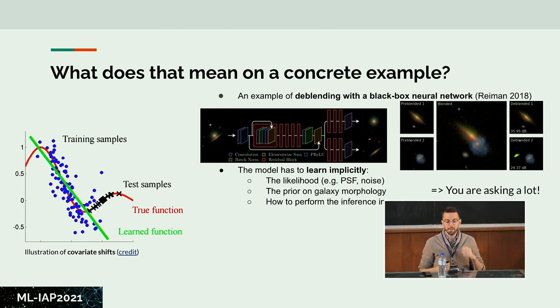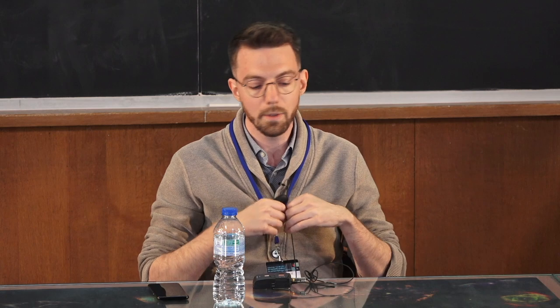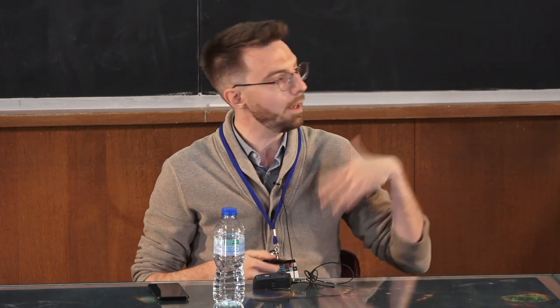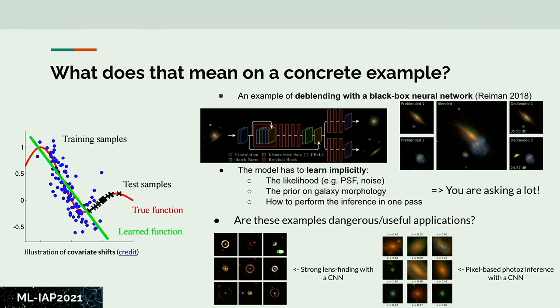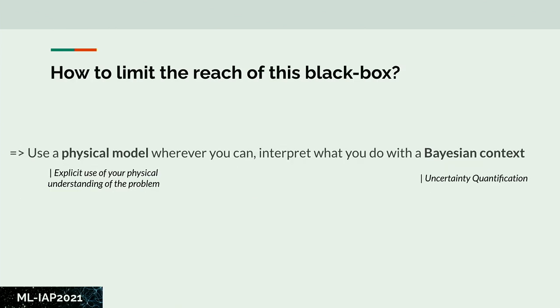What happens in practice with such a model: you can get failures where a yellowish point appears in the output that is not contained in the data — there's no incentive in the data to have a signal there. This is an example of failure where you've injected additional signal where there is none — a complete violation of flux preservation. This raises the question of when it is dangerous to use neural networks in these cases, particularly for strong lens finding or inferring photometric redshifts directly from images.